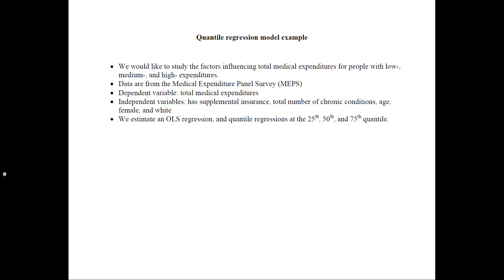This is the problem we're going to consider. We want to examine what factors affect total medical expenditures, and instead of just looking at averages we want to know what these effects are for people that have low, medium, and high expenditures. We want to look along the distribution or the quantiles of the dependent variable — in this case total medical expenditures. The data comes from the Medical Expenditure Panel Survey. The dependent variable is total medical expenditures, and independent variables include whether the person has supplemental insurance, the total number of chronic conditions, age, female, and white.